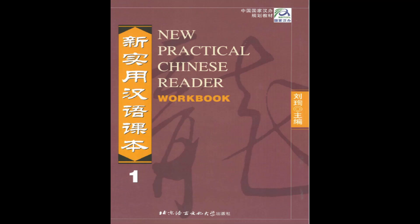3. Listen to the following dialogue and decide whether the statements are true (T) or false (F). 马大为和丁丽波去医院看她。在医院，他们看见一位很漂亮的中国姑娘，马大为很高兴，说：我给你们介绍一下，这是我的女朋友，她叫小燕子。丁丽波说：认识你很高兴。小燕子说：认识你们，我也很高兴。